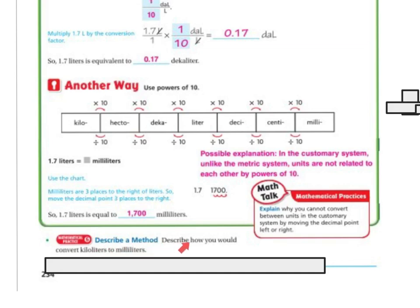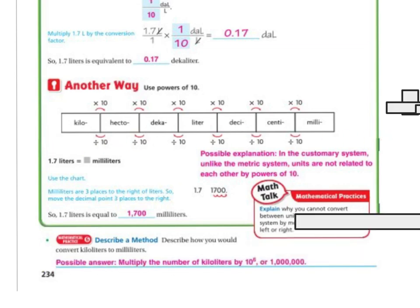Now, describe a method. Describe how you would convert kiloliters into milliliters. There's kiloliters, there's milliliters. Well, look: 1, 2, 3, 4, 5, 6. I'm going to move my decimal six places this way. So the possible answer is to multiply the kiloliters by 10 to the sixth power, or 1 million, or simply move your decimal place over six places.